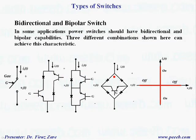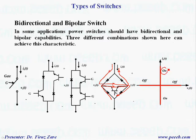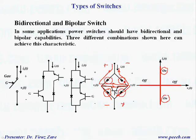Now let's concentrate on the third configuration. If the current is positive, it passes through this diode, and when we apply the gate signal, this transistor operates — this is the current loop. When the current is negative, this diode conducts, and when we apply the gate signal, this transistor operates — this is the current loop. This configuration handles positive and negative current. If we have positive voltage across the switch, one diode in each leg can block. When we have negative voltage, the diodes in these legs can block. So this switch can block positive and negative voltage.